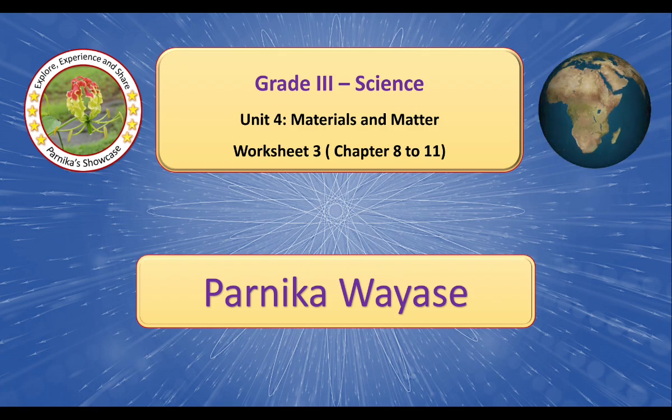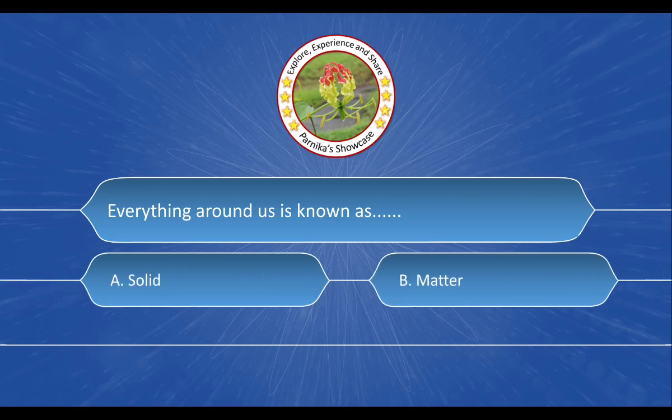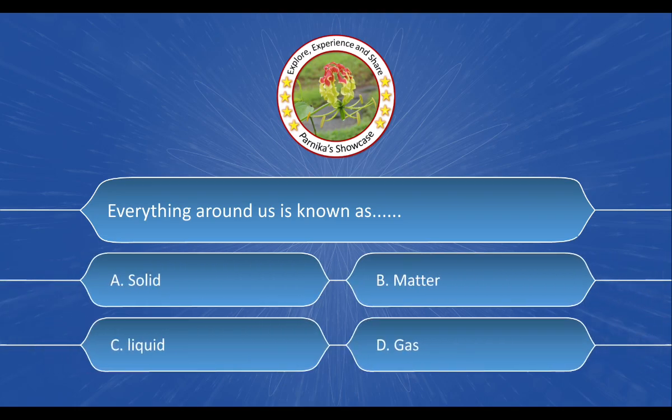Let us begin with the first question. Everything around us is known as blank, and the options are A. Solid, B. Matter, C. Liquid, D. Gas. And the correct answer is option B, Matter.